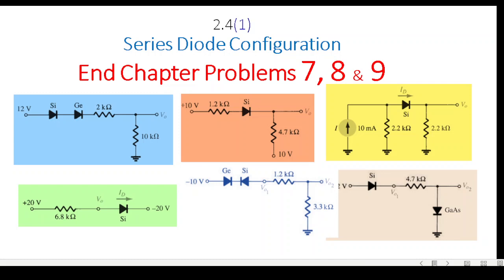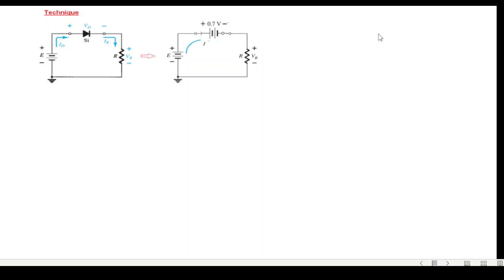This video will be solving end-chapter problems 7, 8, and 9 from chapter 2 of Mr. Ballstead's book about series diode configuration. Before we start, when we are sure that the diode is forward biased — the battery's positive is connected to the positive terminal, or the current direction is the same as the diode arrow — we replace the diode with its equivalent voltage: 0.7V for silicon, 0.3V for germanium, and 1.2V for gallium arsenide.